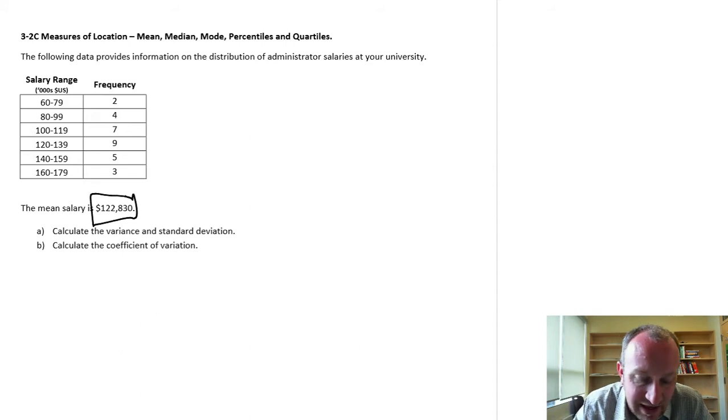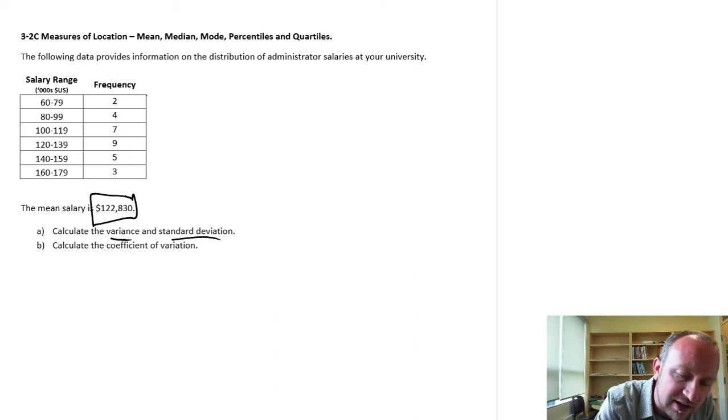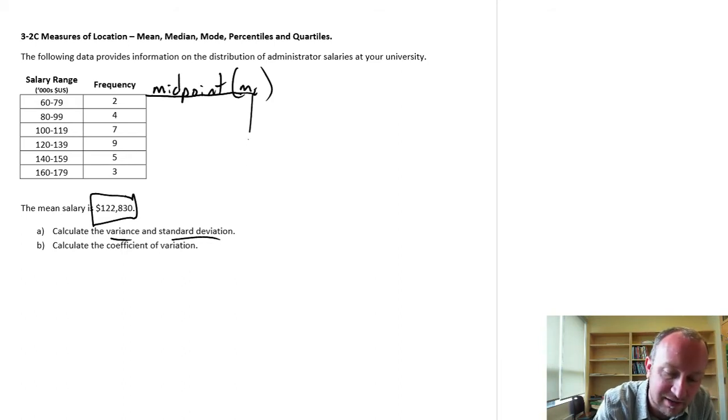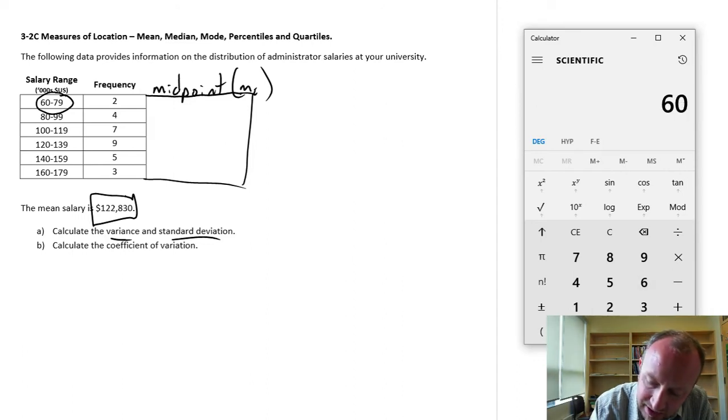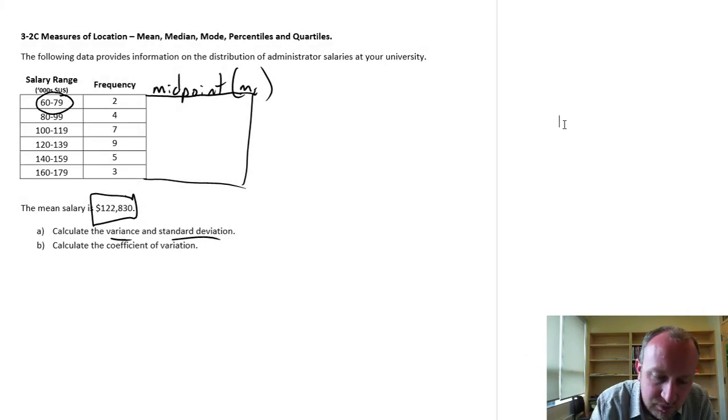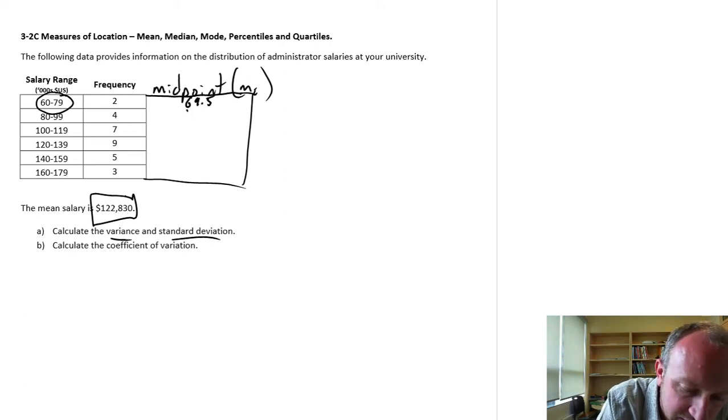Now we're going to use that information to calculate the variance and the standard deviation. So again, without having the raw data to work with, just having this frequency distribution, the first step that we need to do is calculate the midpoints. And so that's just the midpoint of the range, or the class, that is being used. So in this example, I have that first class is 60 to 79. So we can use our calculator and find the middle of that. 60 plus 79 divided by 2. So that's 69.5. And I'm going to cheat a little bit,